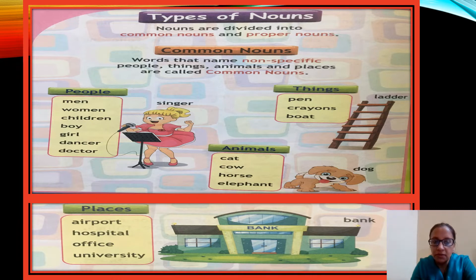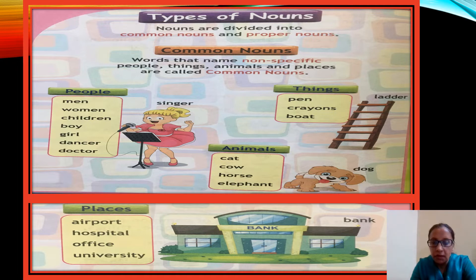Common nouns are words that name a human, an animal, or a place in a general way — not referring to any particular one. For example: school, teacher, cat, flower.